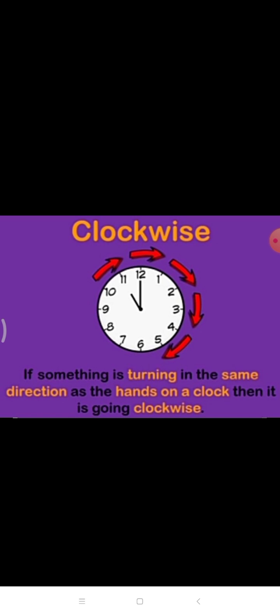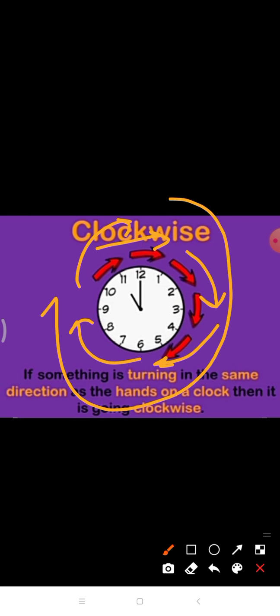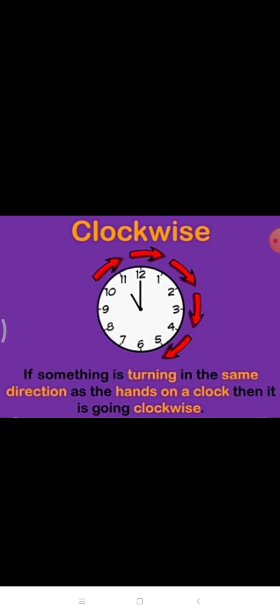There are two types of directions: clockwise direction and anti-clockwise direction. Clockwise means if something is turning in the same direction as the hands on a clock, it is going clockwise. Clockwise motion proceeds from the top to the right, then down, then to the left, and then back up to the top.